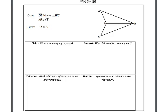What we learned is that in order to prove two parts of a triangle are congruent, we first need to prove that the triangles are congruent. We want to write our claim: we're trying to prove that angle A is congruent to angle C.